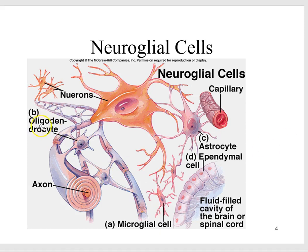Let's talk about each one of these. The oligodendrites form the myelin sheath that protects the axons in the central nervous system. The microglial cells are phagocytes — they protect the neuron in response to inflammation. The astrocyte are star-like cells that transport water and salts between capillaries and neurons. The ependymal cells line the membranes within the brain and around the spinal column.